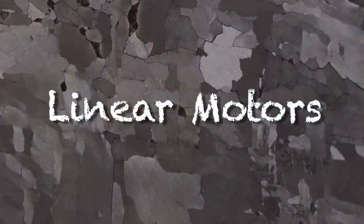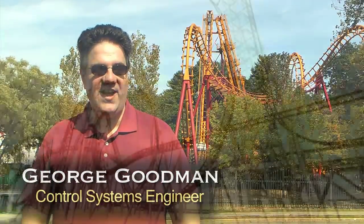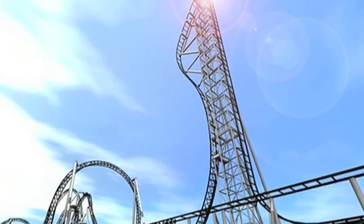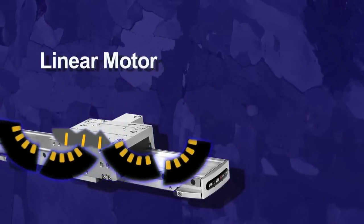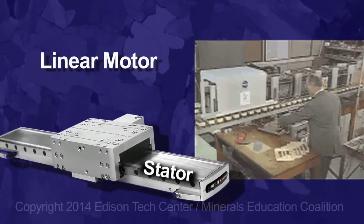Some roller coasters use linear motors so that the ride can be started and stopped anywhere. The job of the roller coaster designer is to find the acceleration settings that give the most fun. Like every motor, the linear motor has two parts, the stationary part and the moving part.